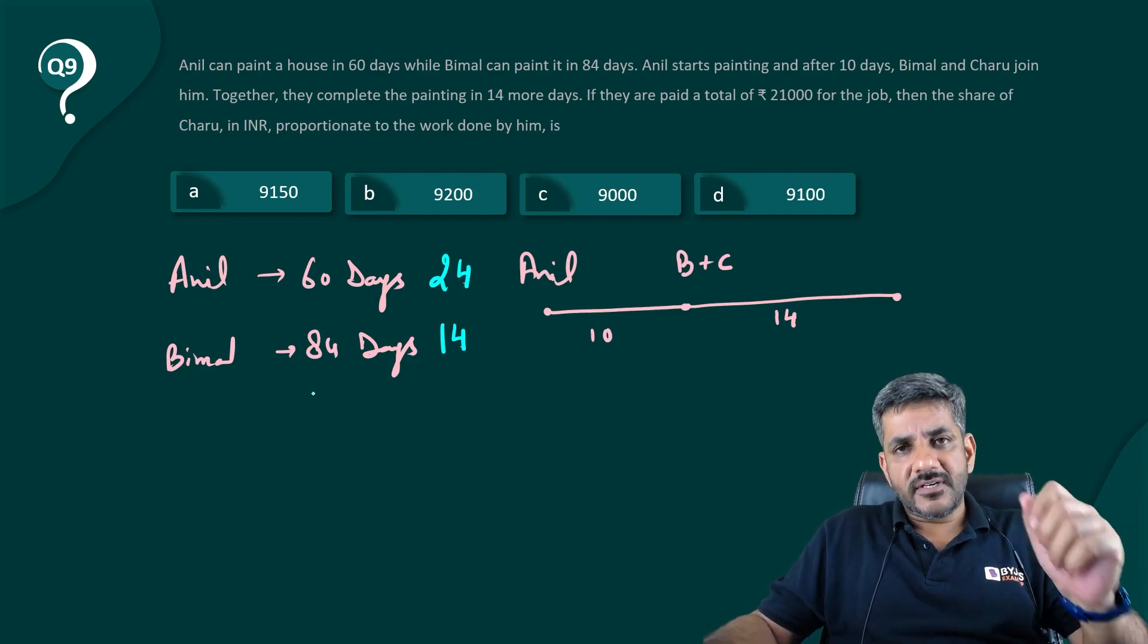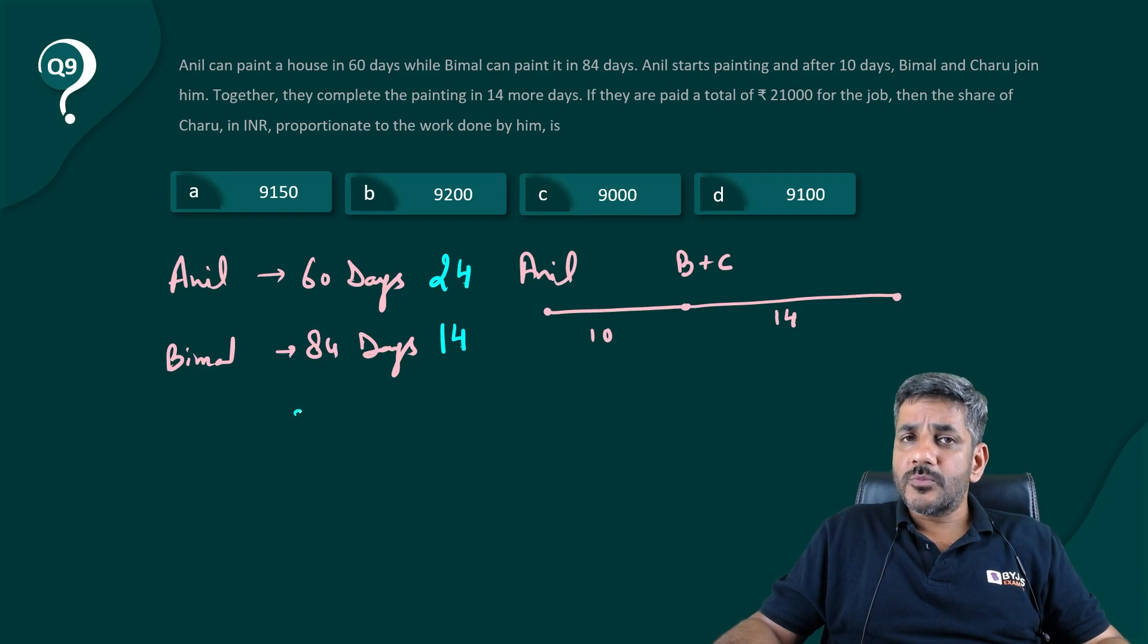So Anil has worked for 24 days, Bimal has worked for 14 days. Anil can do the job in 60 days and he has worked for 24 days, so how much work did he do? 24 by 60, which you can also write as 2 by 5.